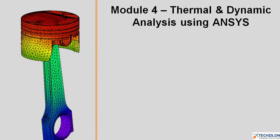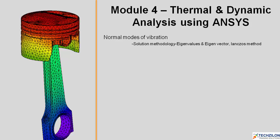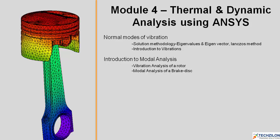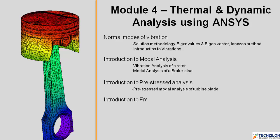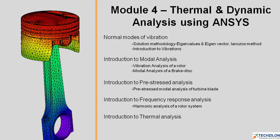In module 4, we'll be looking into thermal and dynamic analysis using ANSYS. Under this, you'll learn normal modes of vibration, including solution methodology, eigenvalue and eigenvector, the Lanczos method, and introduction to vibrations. You'll then be introduced to modal analysis, covering vibration analysis of a rotor and modal analysis of a disk brake. We will then move on to introduction to pre-stressed analysis, running a pre-stressed modal analysis of a turbine blade. You will also be introduced to frequency response analysis, including harmonic analysis of a rotor system. Finally, you will have an introduction to thermal analysis, covering conduction heat transfer in a friction ring.